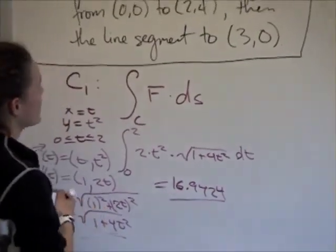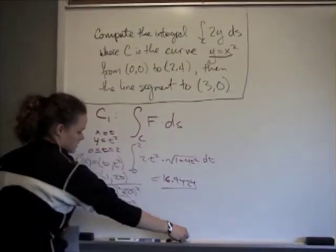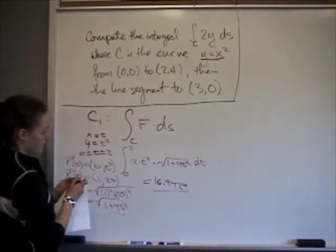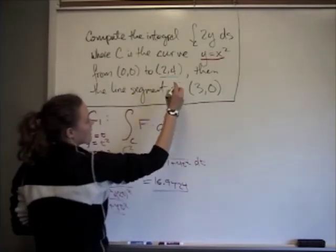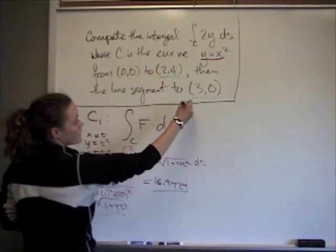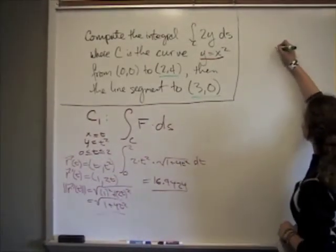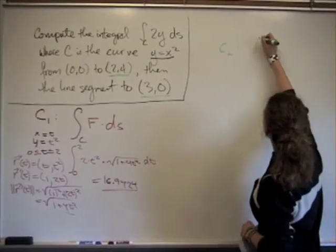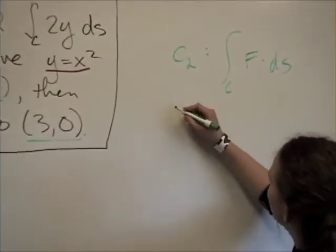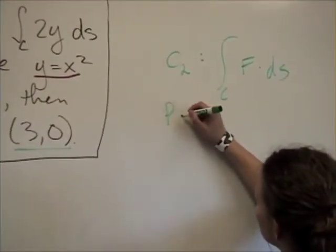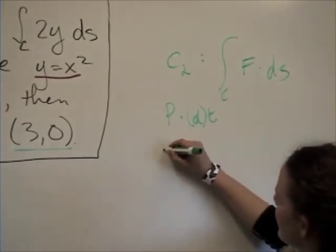That is the path integral along curve C1. For the second curve, it's a line segment from our ending point to this new ending point. We'll parameterize this one using the formula: point plus direction times t.